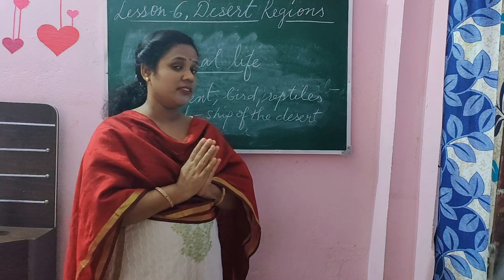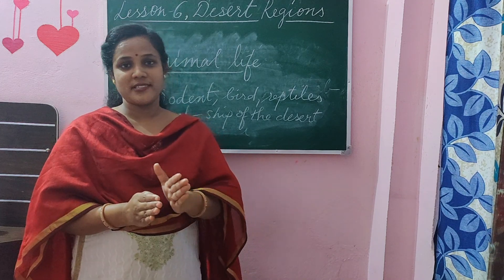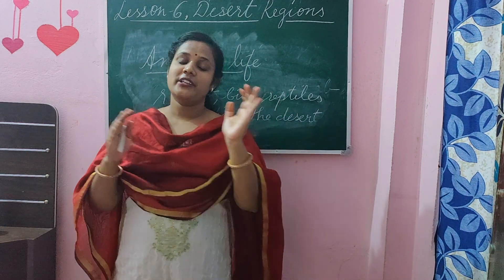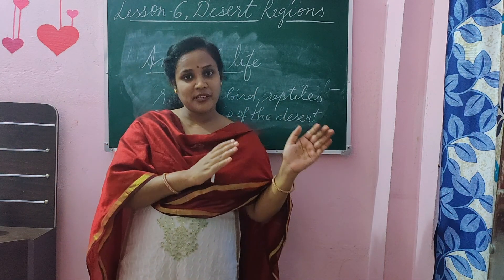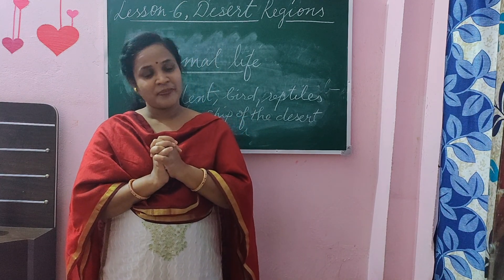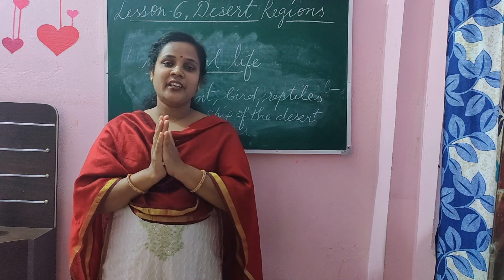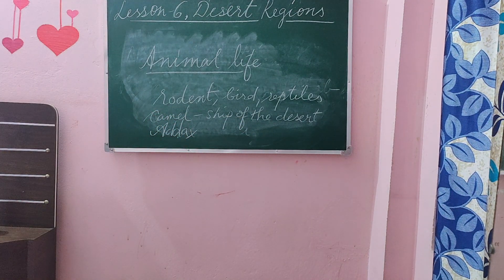So today we have learned about animal life and plant life in desert regions. Till now we have covered: what type of climate desert regions have, what type of plant life is there, and what type of animals live there. Tomorrow we will see what type of people or life exist in desert regions. Read the chapter again properly and if you have any confusion, you can ask me in the next class. Thank you, have a nice day. Bye.